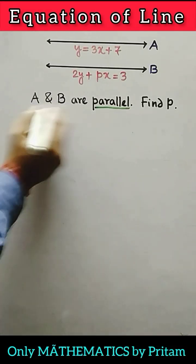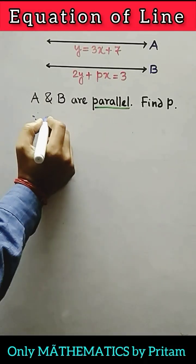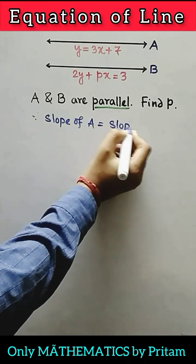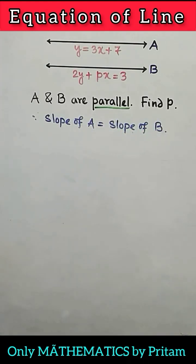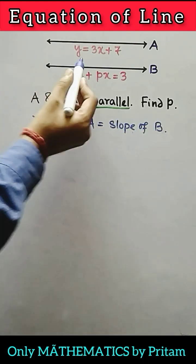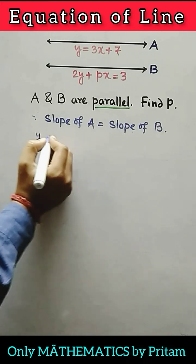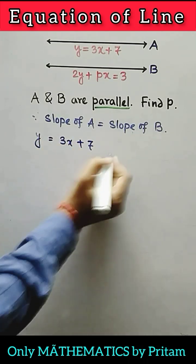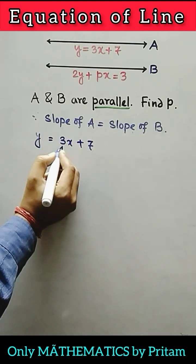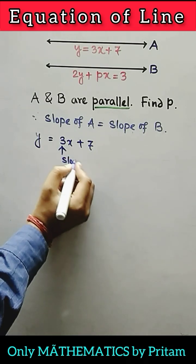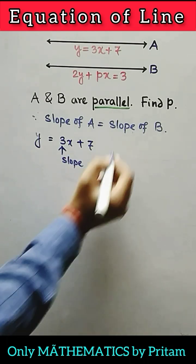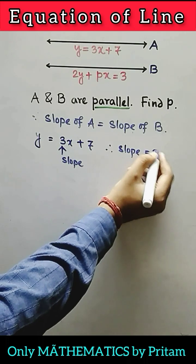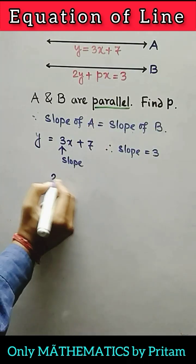Straight lines a and b are parallel, so the slope of a is equal to the slope of b. Straight line a is y equals 3x plus 7, and we know that the coefficient of x is the slope. Therefore, the slope of a will be 3.